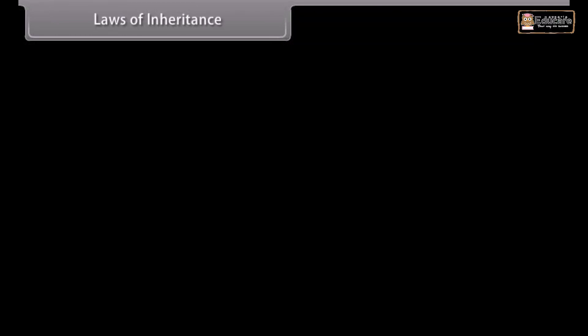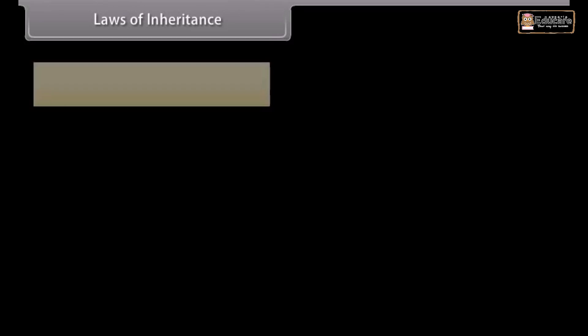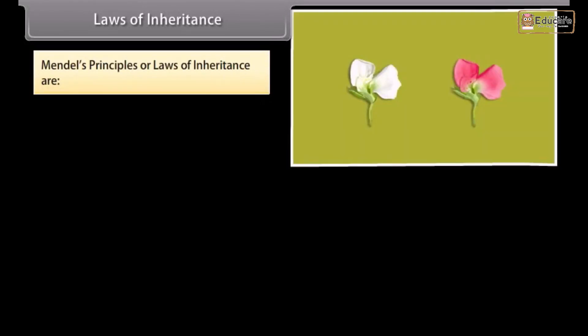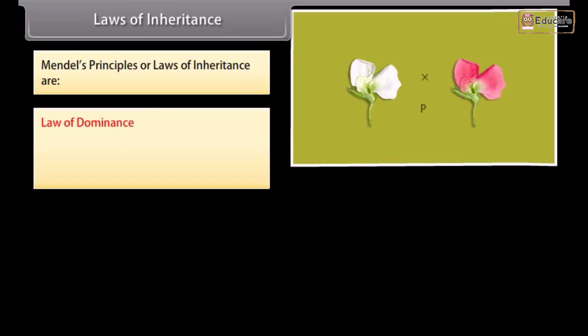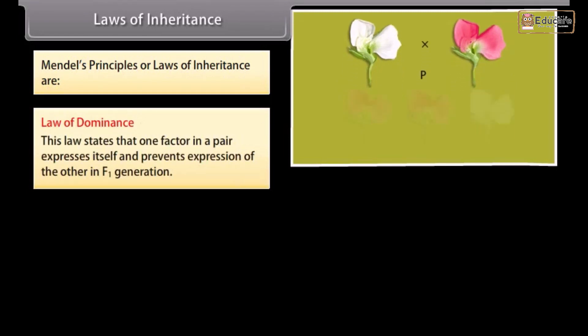Laws of inheritance. Mendel's principles or laws of inheritance are: Law of dominance. This law states that one factor in a pair expresses itself and prevents expression of the other in F1 generation.